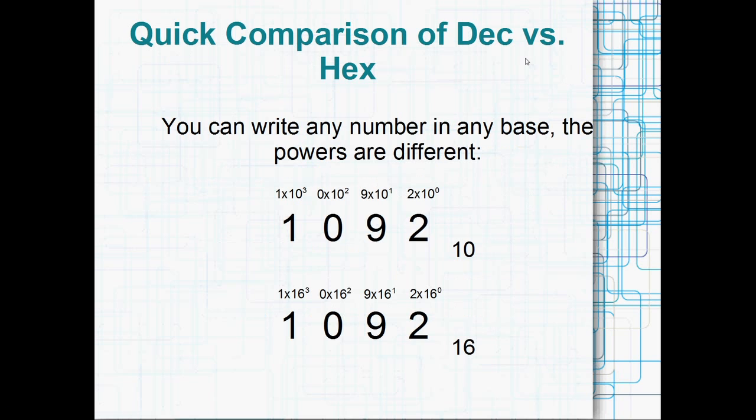Just a quick comparison of decimal versus hexadecimal. If we've got the following string, 1092 and a little subscript of 10, well we know that that means 1092 in base 10. But this is what the digits mean. So the 2 actually means 2 by 10 to the 0. The 9 means 9 by 10 to the 1, which is the same as just 9 multiplied by 10. The 0 means 0 multiplied by 10 squared, which is just 0. And the 1 means 1 multiplied by 10 cubed, or 1000.